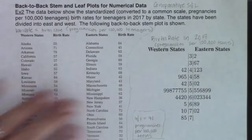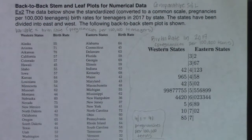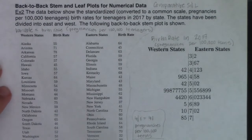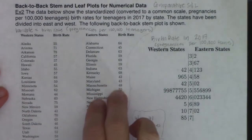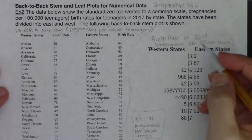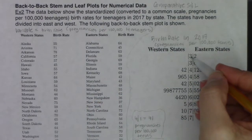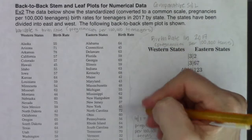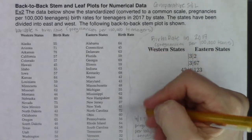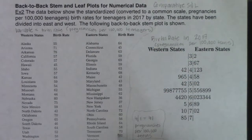Let's try to decipher this back-to-back stem and leaf plot. We can go back-to-back because we had two sets of data — the western half and the eastern half of the country. Let's pick apart 3-2: that stands for 32, and that's on the eastern half of the country. That number is Vermont — I had mentioned it before.